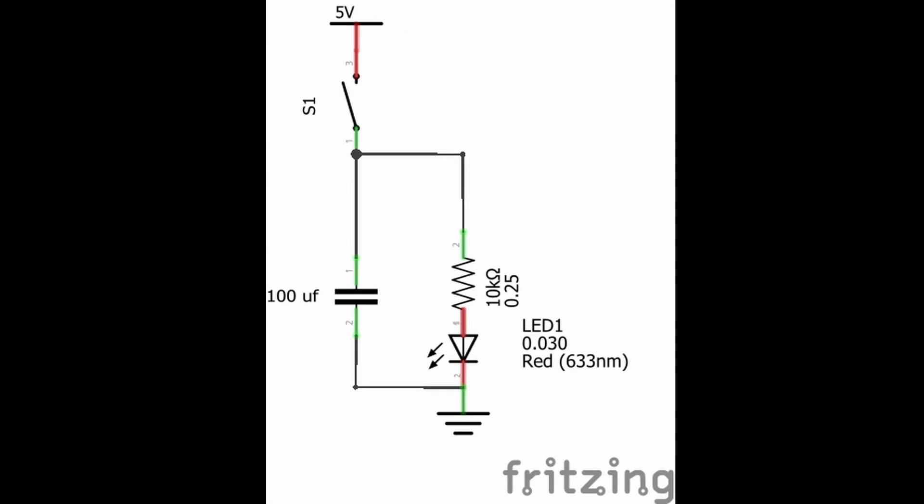The discharge time constant is approximately resistance by capacitance. In this case, 10 kilo ohms by 100 microfarads equal to one second. In order to increase the time, we either need a bigger capacitor or a higher resistance. However, if the resistance is too high, the current flow through the LED is not sufficient to light it up. This is where the 555 timer comes in.